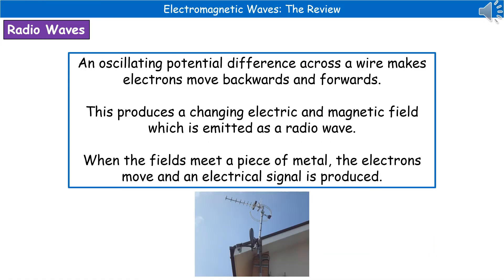One thing that we do need to know on the higher-tier paper is how we can actually produce and detect radio waves. So if we've got a wire, and we've got an oscillating potential difference across that wire, then as a result of that, electrons are going to be moving backwards and forwards. So as a result of those electrons moving backwards and forwards, we're going to produce a changing electric and magnetic field, which hopefully is bringing back some memories of our earlier physics topic. And that will be emitted as a radio wave. Because remember what we said, our electromagnetic wave is an oscillating magnetic and electric field. When that field that's traveling through the air then meets a piece of metal, which is the aerial that's sticking off your house, then what happens as a result of that is that the electrons within the aerial are going to move, and then they produce an electric signal. And that is your radio or TV signal that comes down your aerial.